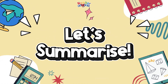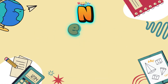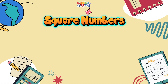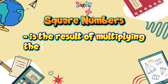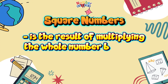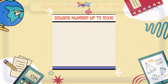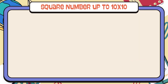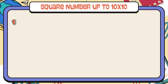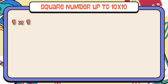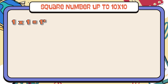Let's summarize. What is a square number? It is the result of multiplying a whole number by itself. Let's check out square numbers up to 10. 1 times 1 is equals to 1, 1 squared is equals to 1.